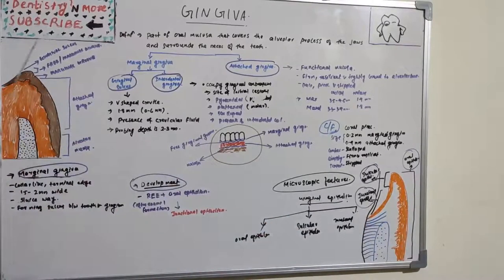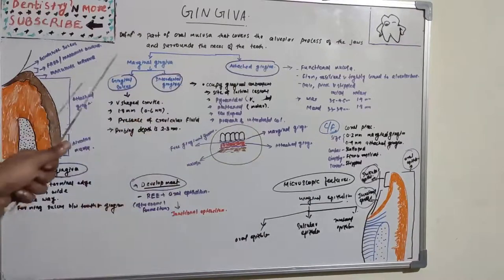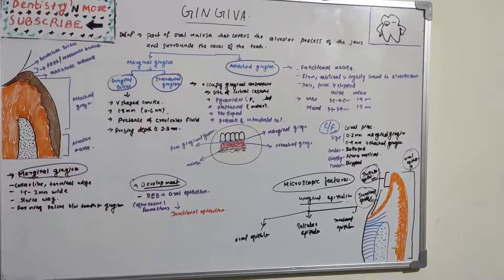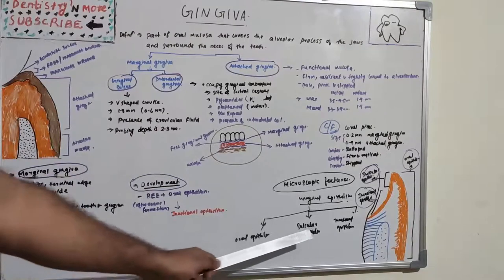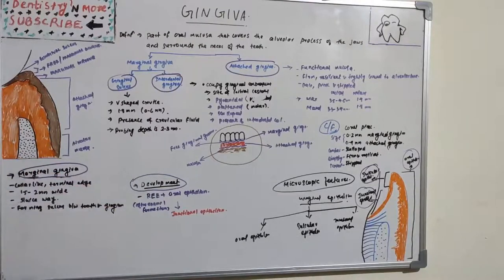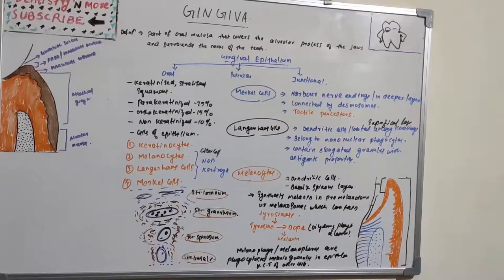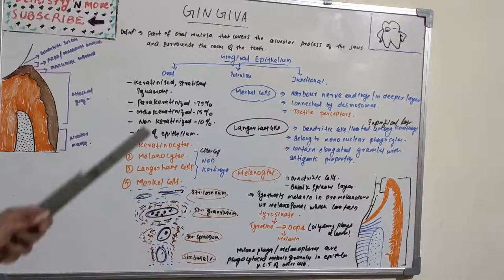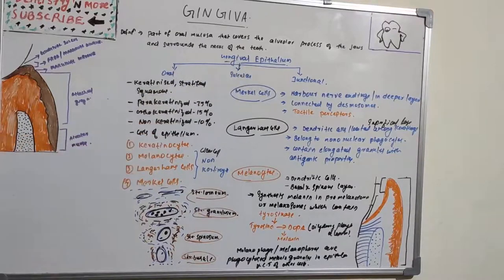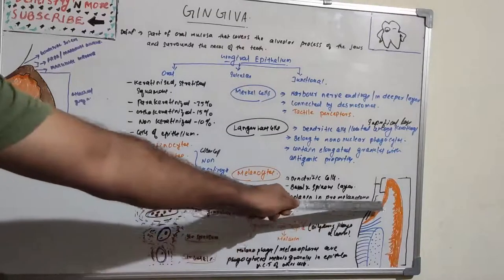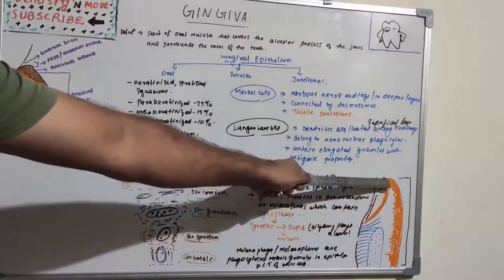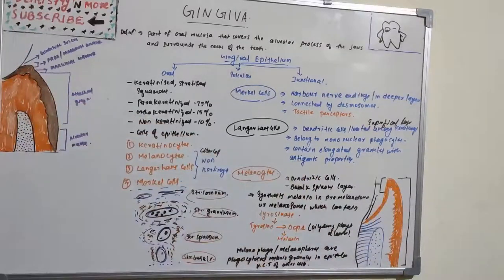That concludes the basic introduction, classification — marginal and attached Gingiva, gingival sulcus, and interdental Gingiva. Now let's see the various epithelial types in Gingiva: oral epithelium, sulcular epithelium, and junctional epithelium.